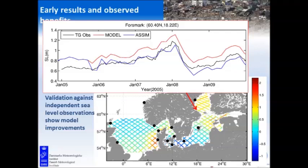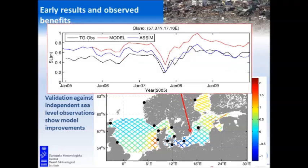Another example from a bit further south, where the surge is actually negative — the water was pushed into the Baltic Sea. Again we see that the assimilated model is closer to observations than the model without assimilation.